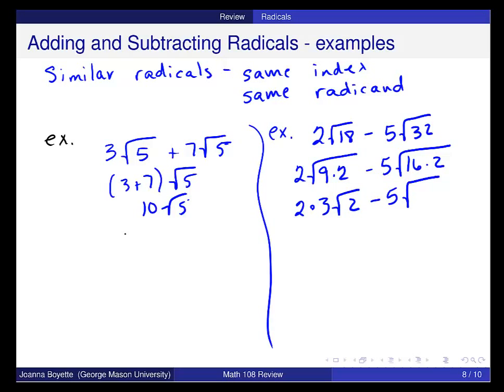I want to take out 16. And I have the square root of 2. So here I get 6 square roots of 2 minus 20 square roots of 2, or negative 14 times the square root of 2.